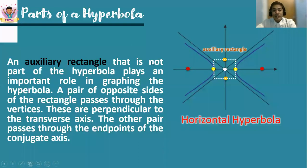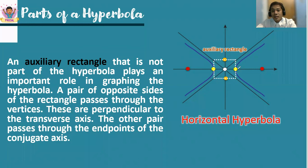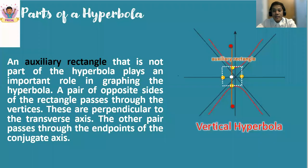An auxiliary rectangle, which is not part of the hyperbola, plays an important role in graphing it. The rectangle passes through the vertices and also through the endpoints of the conjugate axis, forming the rectangle. The pair of opposite sides passes through the vertices, and the other pair passes through the endpoints of the conjugate axis.